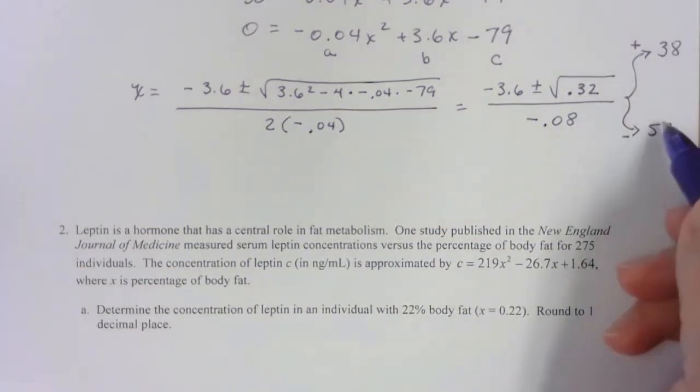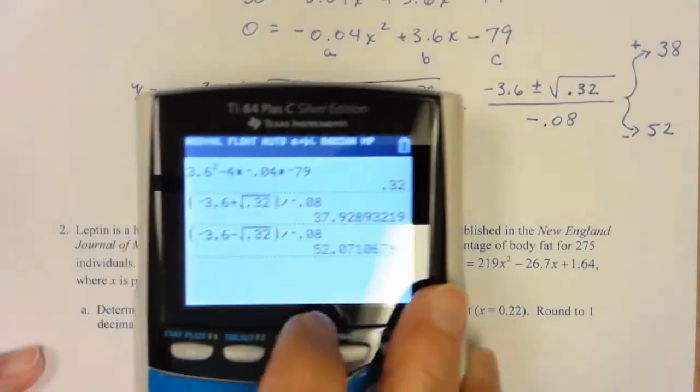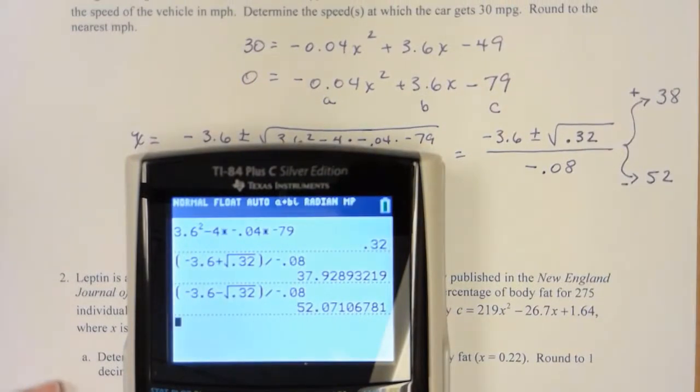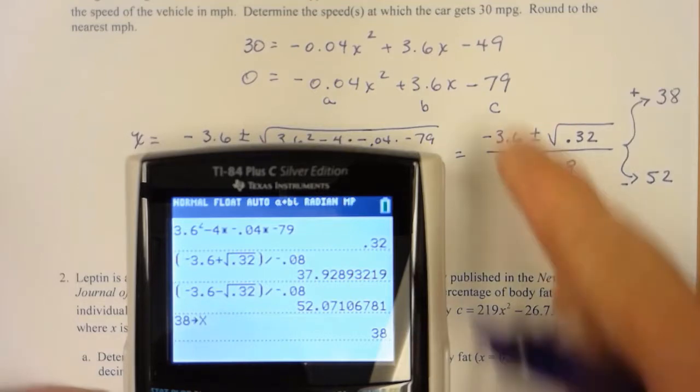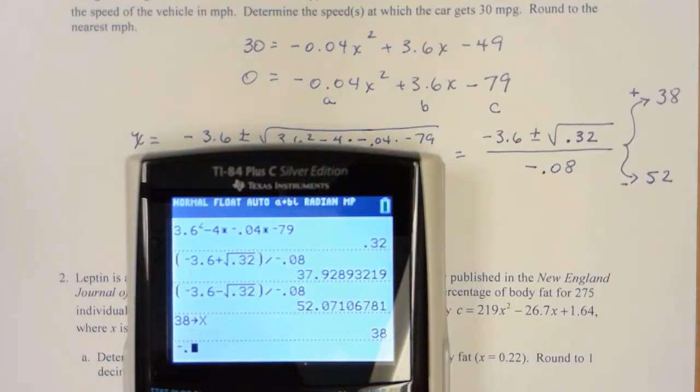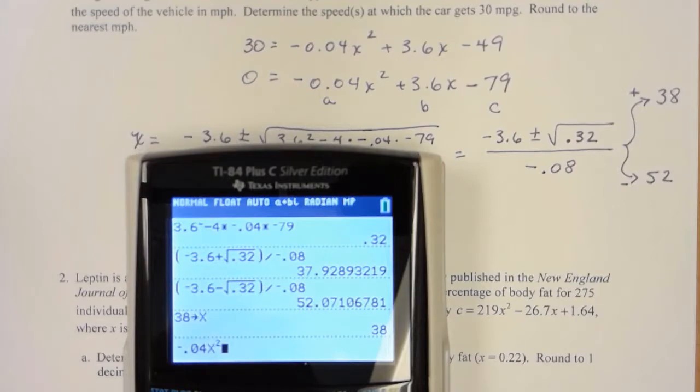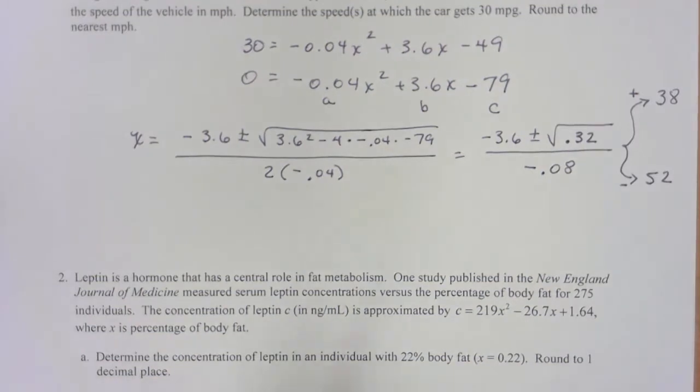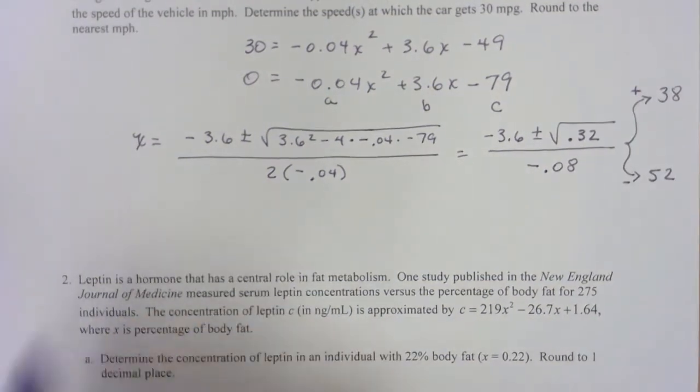So you can store these and see if it works. It'll be off a little bit because I did round. So let me pull my equation back down. Let me type in 38, storing for x, and type in my original: negative 0.04 x squared plus 3.6 x minus 49. And we should come around 30. Yep, that's pretty close. I'd say 52 is the same way. Okay, so to answer this question.